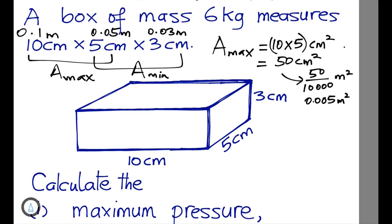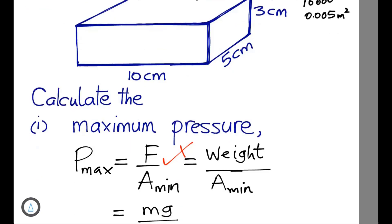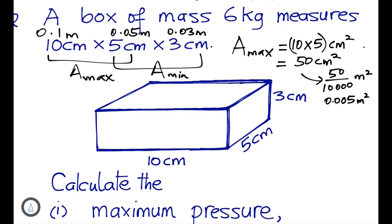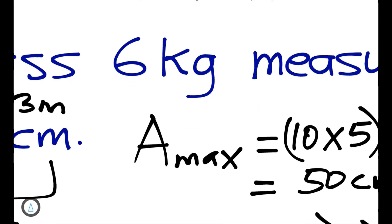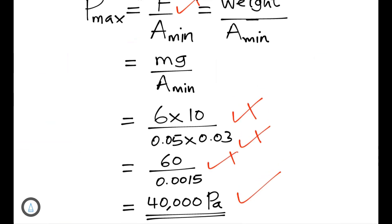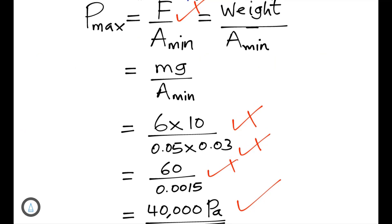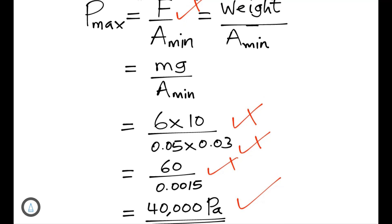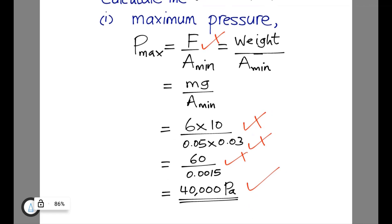To calculate maximum pressure: use the formula pressure = force ÷ minimum area. Since mass is given, convert to weight by multiplying by 10. So maximum pressure = (6 × 10) ÷ (0.05 × 0.03) = 60 ÷ 0.0015 = 40,000 Pascals.